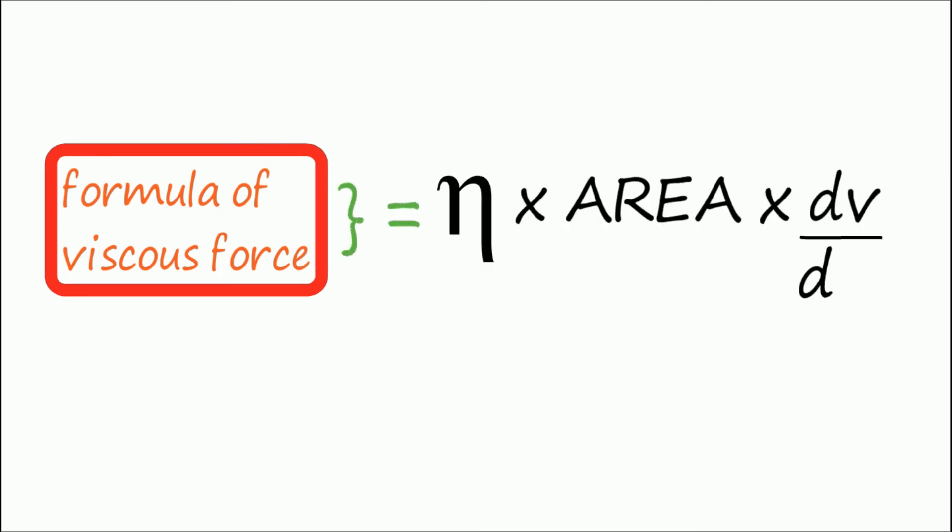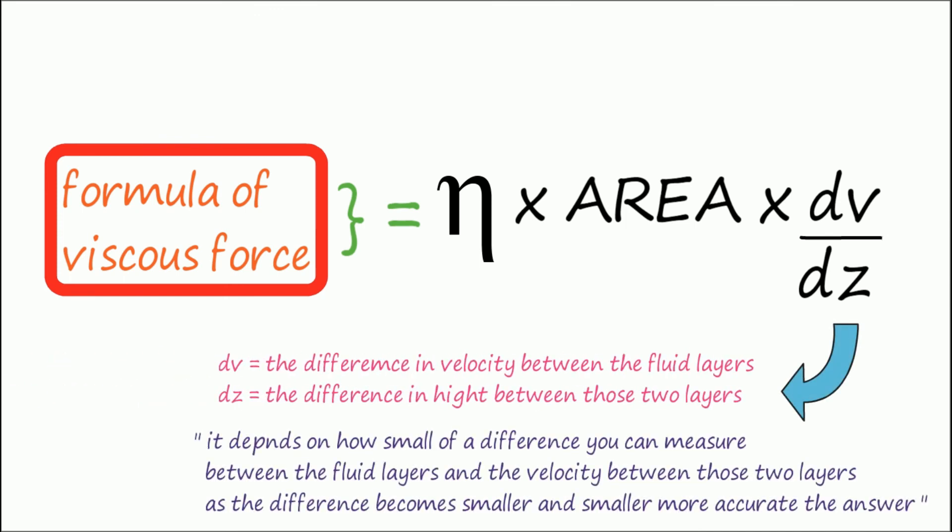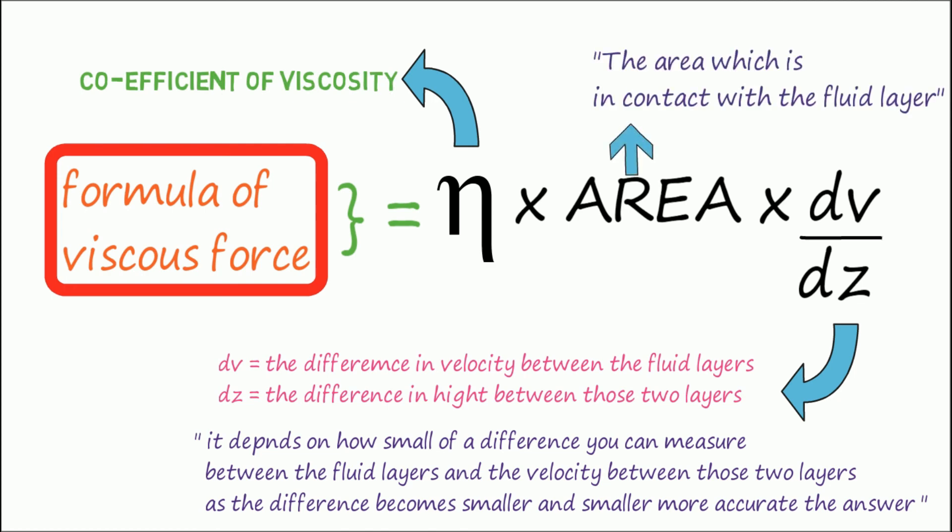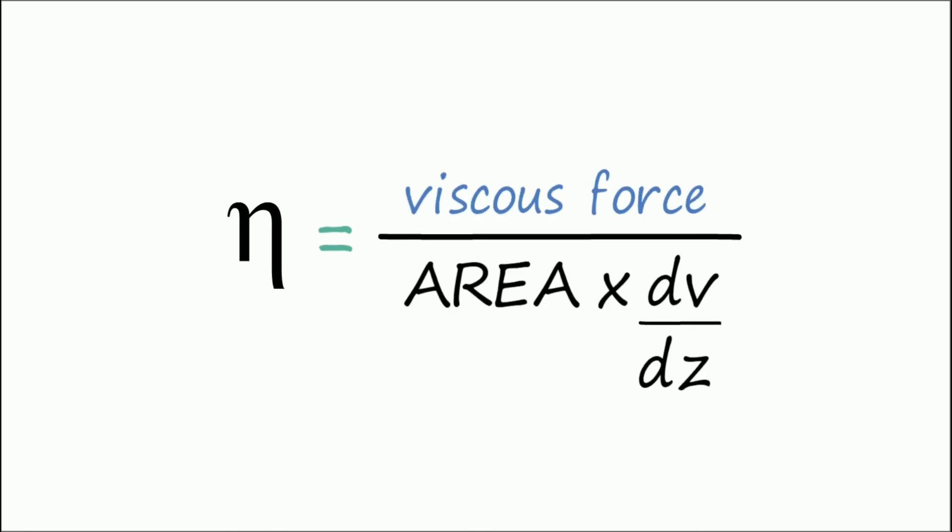To find the coefficient of viscosity, we can take a look at the formula of viscous force. I will be deriving and explaining this formula in detail in my later videos, but for now, viscous force is equal to eta times area and multiplied by the ratio of velocity between the horizontal fluid layers and the distance between those layers. And just by rephrasing the formula, we can find eta, which happens to be the coefficient of viscosity.